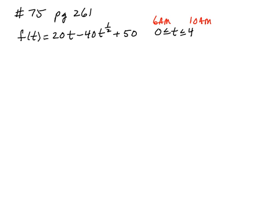The function calculates the average speed of the vehicle during time t as t ranges from 6 in the morning to 10 in the morning. Now it wants to find the interval where f is increasing and f is decreasing. So to do that I'm going to have to take a derivative.